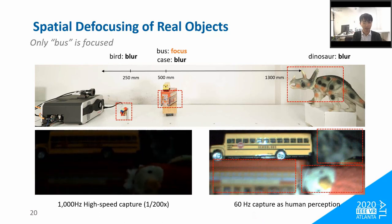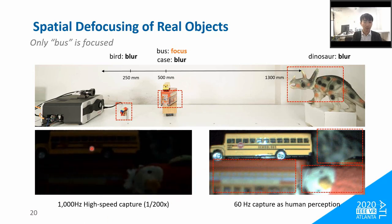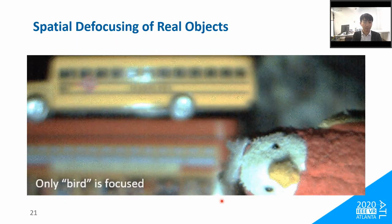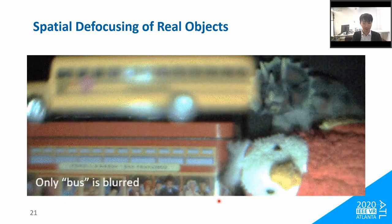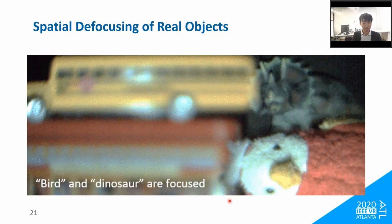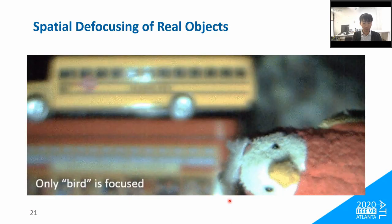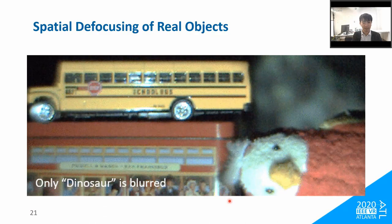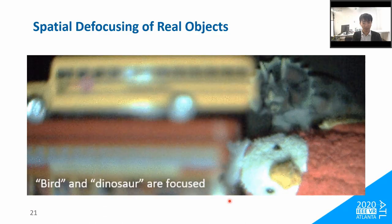In the second condition, we made only the birch appear focused and the other objects appear blurred. The movie again shows that focus modulation and illumination are synchronized accurately, and we can capture the scene with only the birch focused. In addition to these two conditions, we verified many other conditions to confirm the system was working correctly. It is optically impossible to produce such appearances naturally, and these results verify the effectiveness of our spatial defocusing technique.